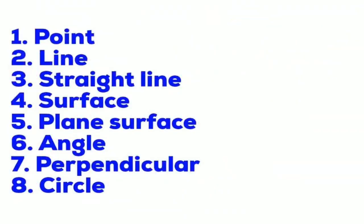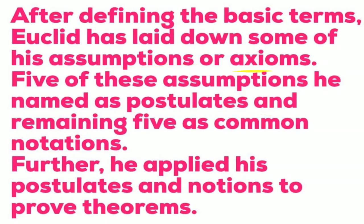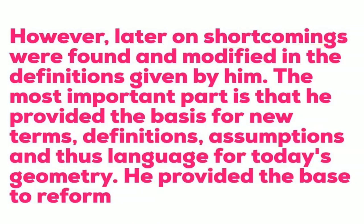After defining the basic terms, Euclid laid down certain assumptions called axioms. Five of these assumptions were named as postulates, and the remaining five were called common notions. He then applied the postulates and notions to prove theorems. Later, shortcomings were found and definitions were modified. Most importantly, he provided the basis for new terms - the geometry language we use today is because of Euclid.